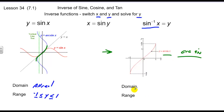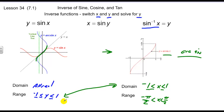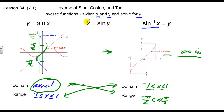Looking at the domain of the inverse sine, you'll notice the domain goes from negative 1 to 1, and the range is going to go from negative pi over 2 to pi over 2. The range and the domain basically flip, which makes sense because we're switching the x and the y's. We pull out just the piece of the graph that never overlaps, which goes as high as pi over 2 down to negative pi over 2.